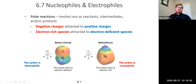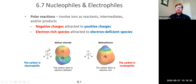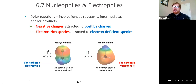Here's a couple examples of polar molecules. Methyl chloride involves a carbon-chlorine bond. Chlorine is more electronegative than carbon, so it pulls electron density from the carbon to itself, creating a partial positive charge on the carbon and a partial negative charge on the chlorine. That's nothing new — it's stuff you've heard a lot.